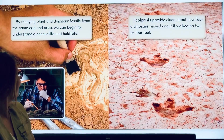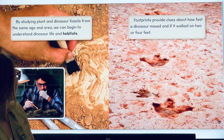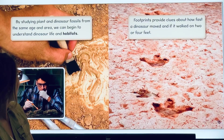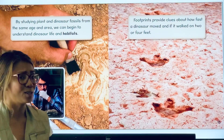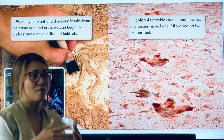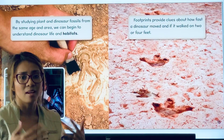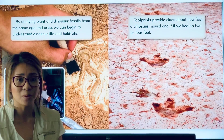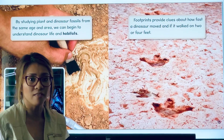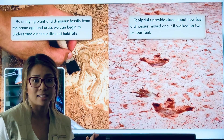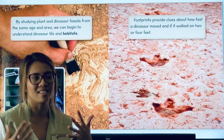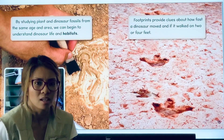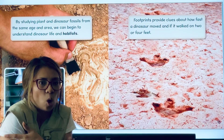By studying plants and dinosaur fossils from the same age and area, we can begin to understand dinosaur life and habitats. Habitats are the environment that plants and animals naturally live in. Some habitats can be the ocean, the desert, the jungle, or somewhere it's cold.